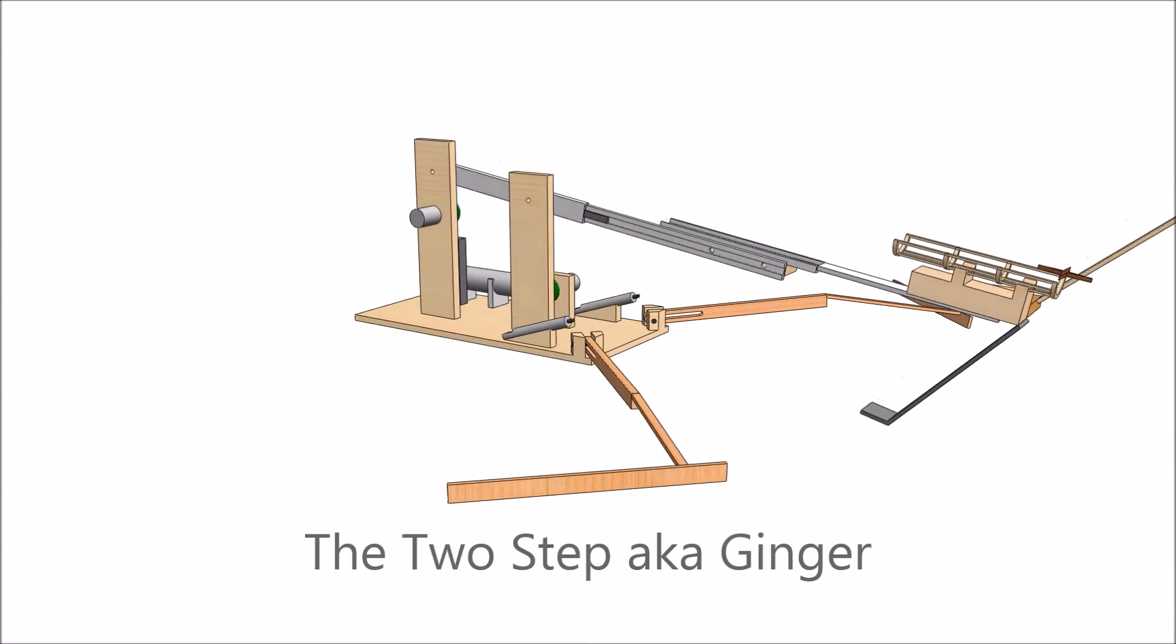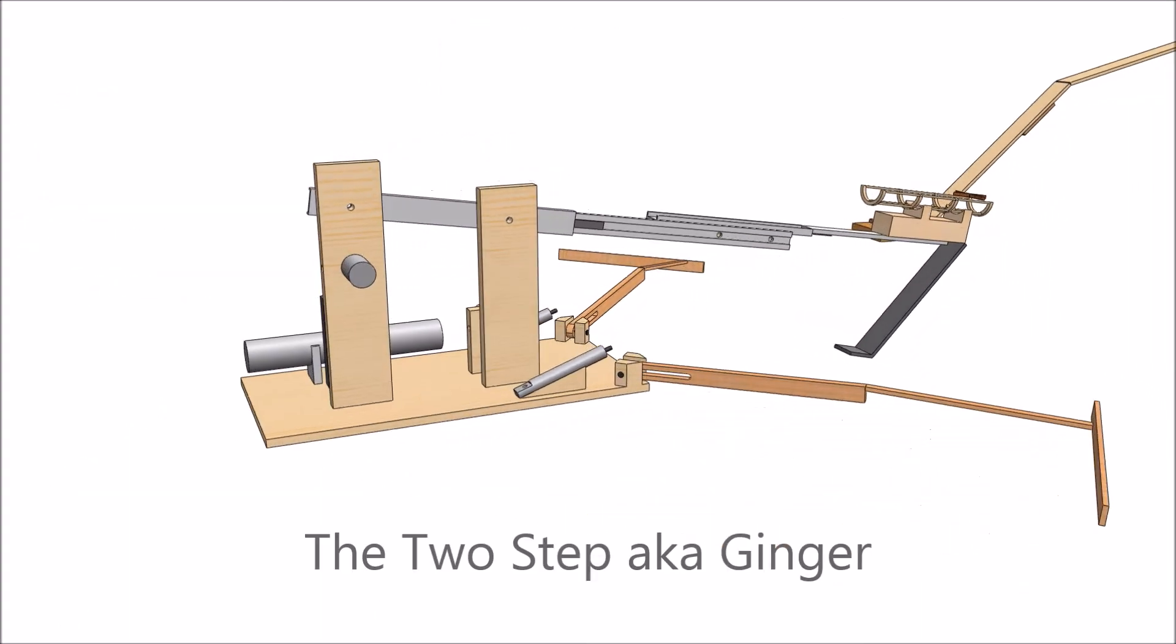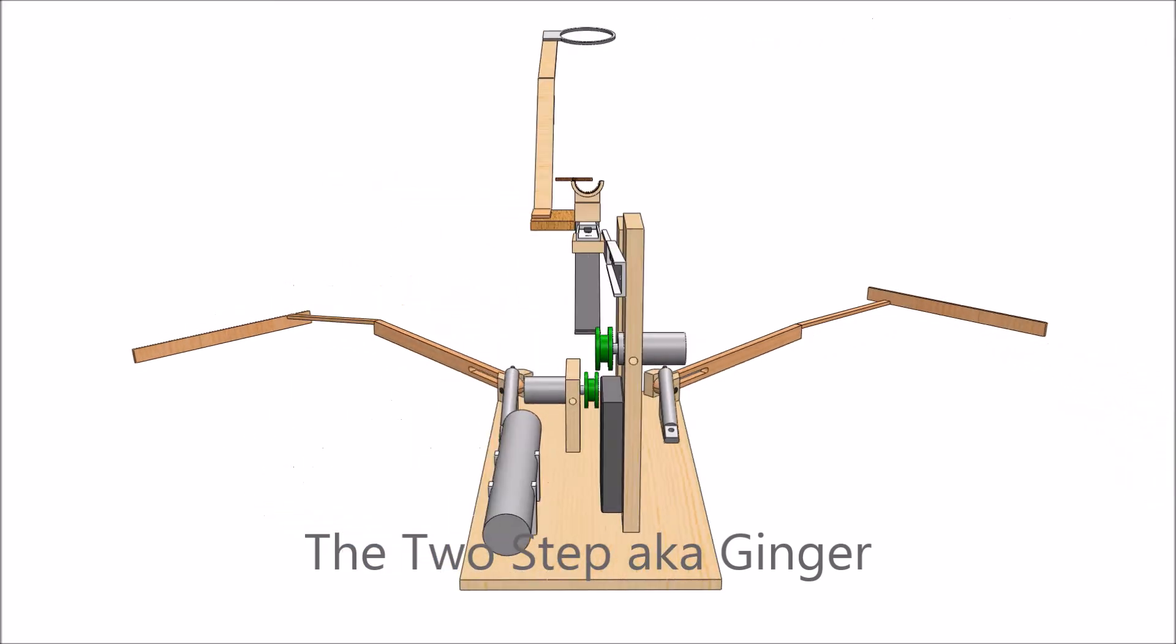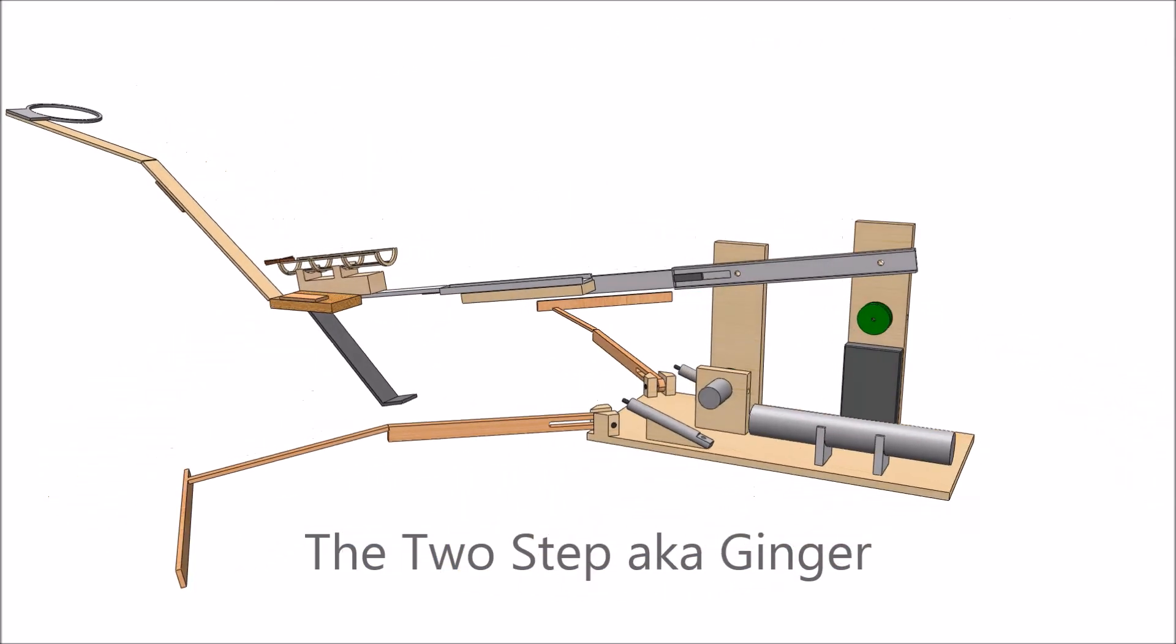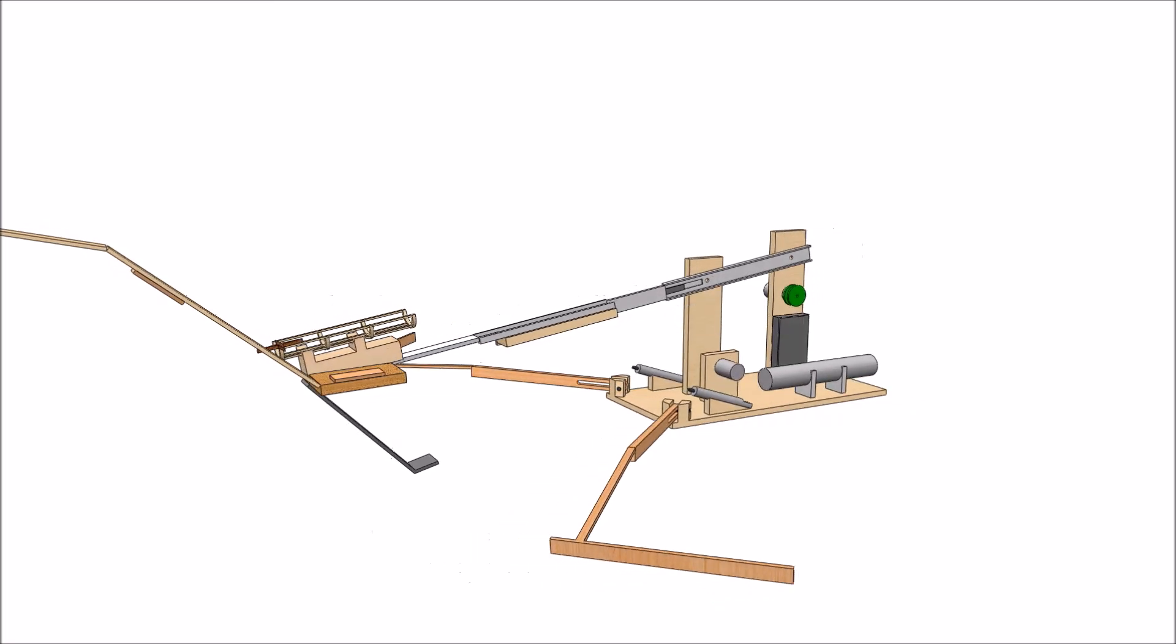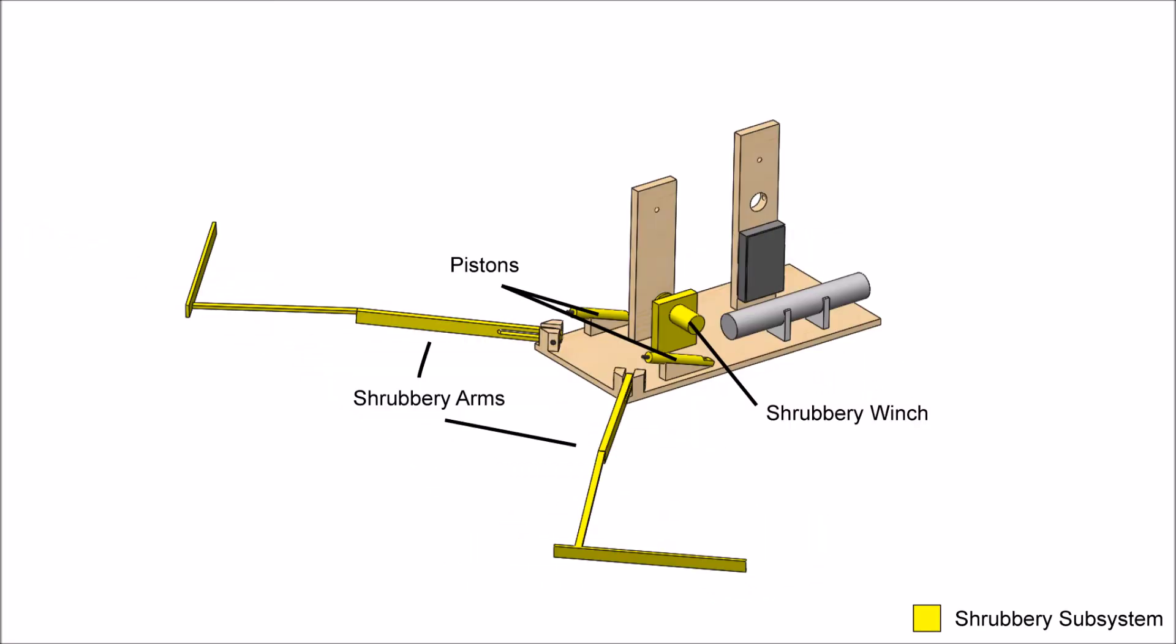This design derives its name from the fact that it deploys in two steps. The shrubbery arms deploy first, followed by the grenade system. Through design and testing, we determined that this machine best accomplishes the goals of defeating the black knight, throwing the hand grenades, collecting the shrubbery, and retrieving the holy grail.